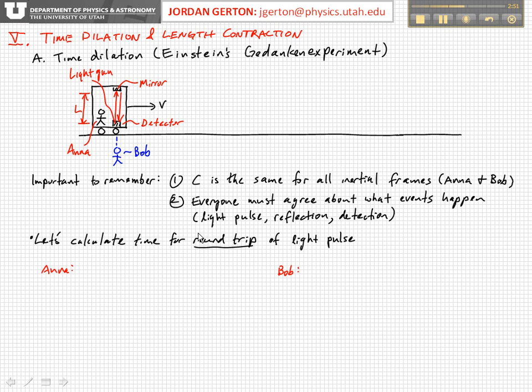Now let's calculate the round-trip time for the light pulse as observed by Anna and by Bob. By comparing those two times, we should arrive at a relationship between the times measured by each observer, which will give us the time dilation relationship.